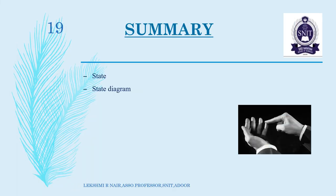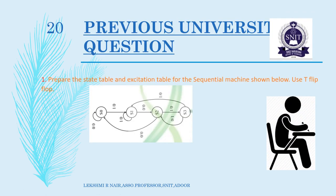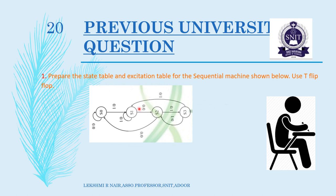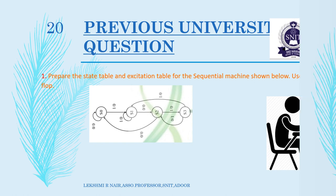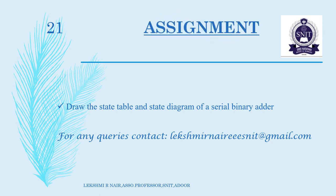Today we discussed about states, state diagrams, state tables, state reduction, and state assignment — everything about the basic elements of a state machine. By using all this, we implement the state machine. The assignment question related to this is: draw the state table and state diagram of a serial binary adder. Hope you all understood the topic. Thank you.